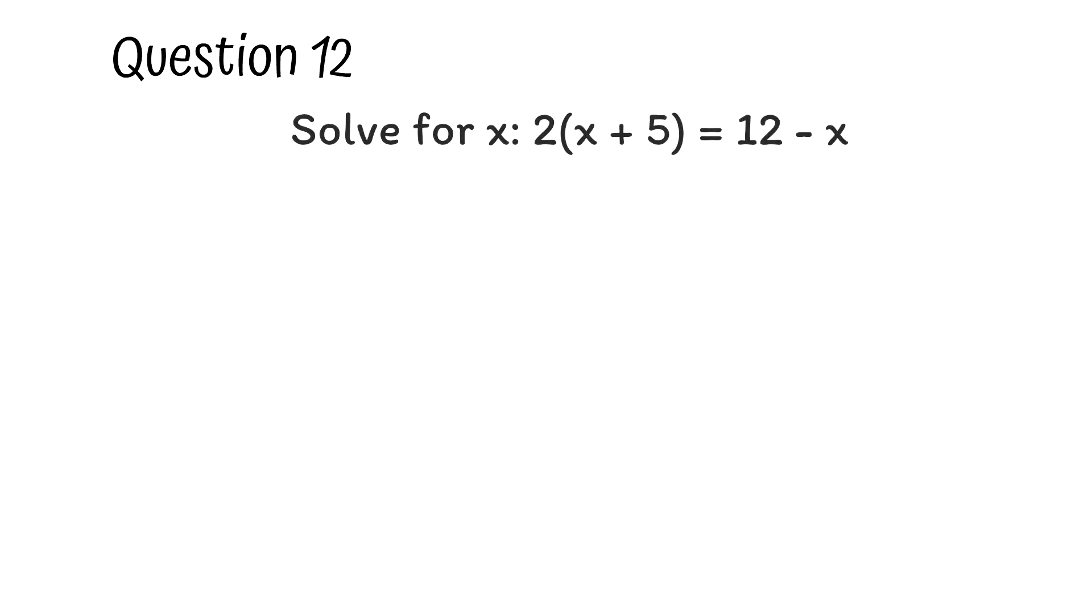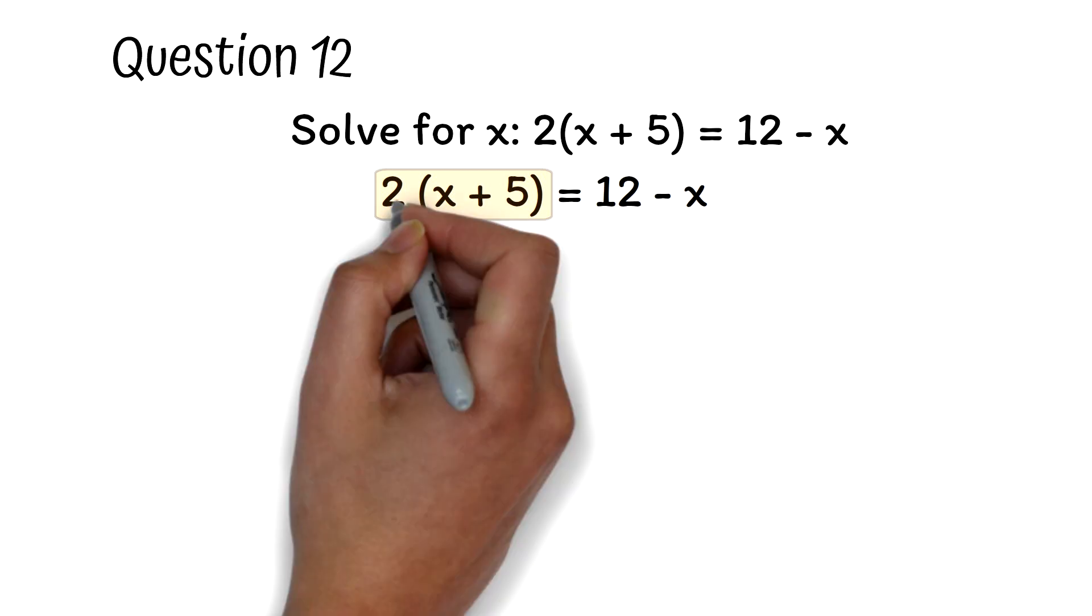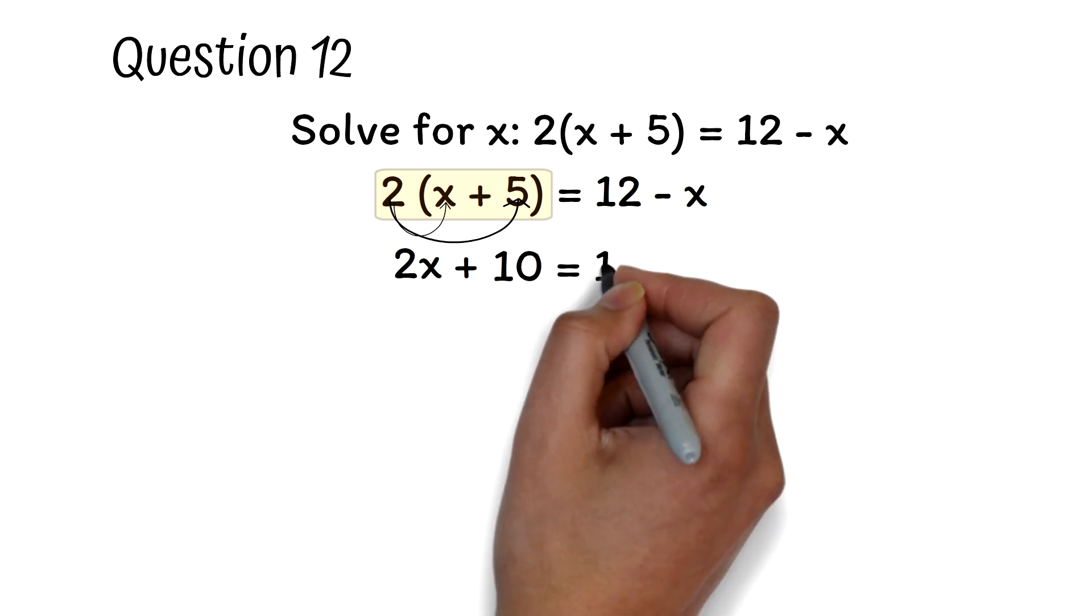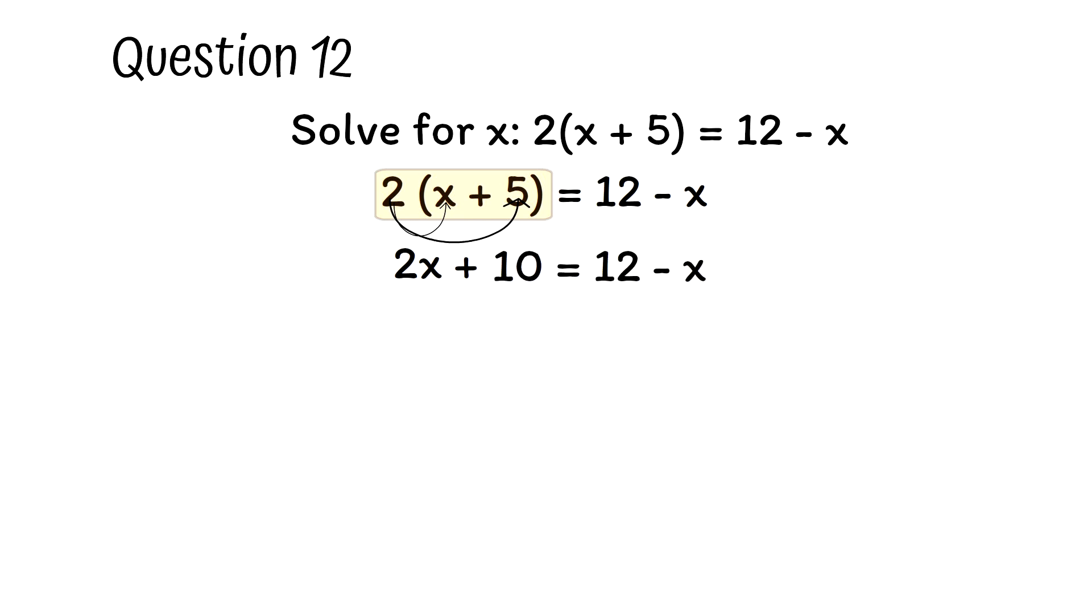Question 12. Solve for x when 2 of x plus 5 is equal to 12 minus x. This is an equation and we need to find the value of x that satisfies the equation. By order of operation, 2 of x plus 5 needs to be expanded. To do that, 2 has to multiply each term in the parenthesis. So we have 2 multiplied by x to be 2x and 2 multiplied by 5 to be 10. This equals 12 minus x.